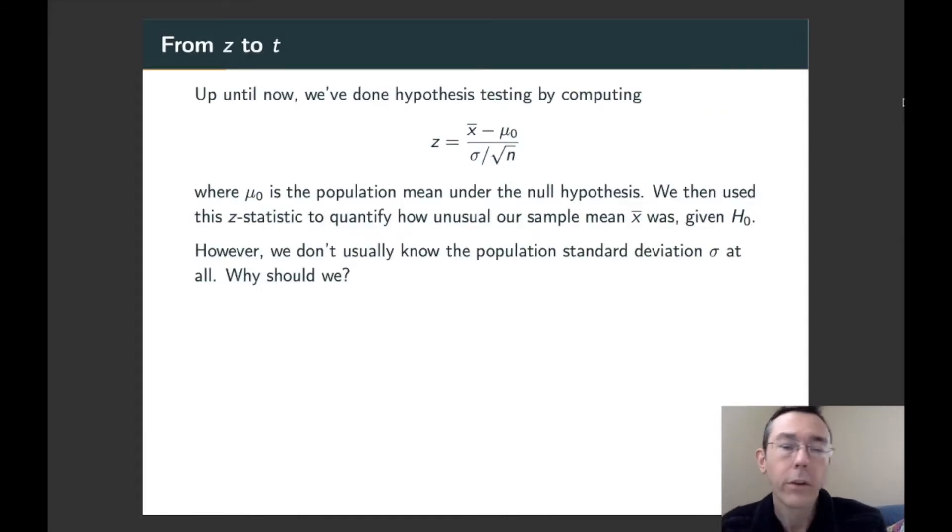Previously we've done all of our hypothesis testing using z statistics. We've considered where the sample mean that we got stands in the sampling distribution of all possible sample means that we could have gotten, assuming the null hypothesis is true and that the population standard deviation is sigma. We then would use that z statistic to get a p-value quantifying how unusual our sample mean was given H naught. The problem with all that is that we usually don't know sigma. We don't usually know what the standard deviation of the population is.